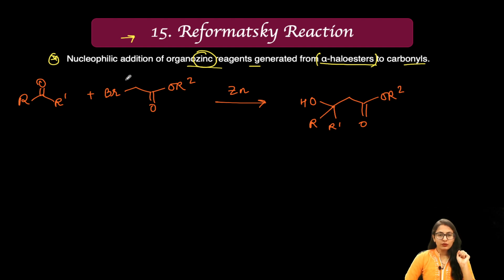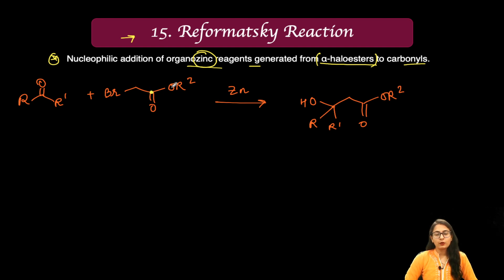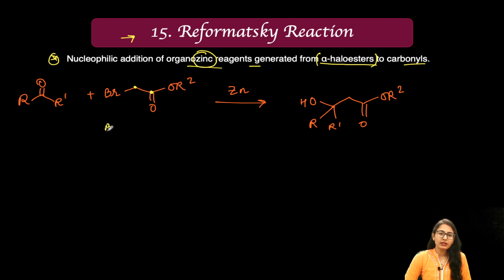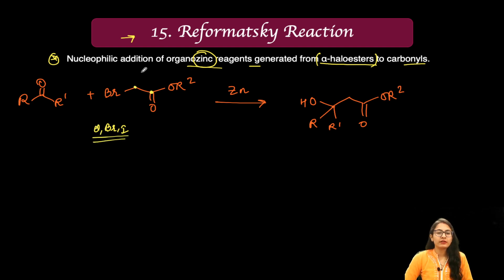Looking at the reaction written here, the alpha-haloester has an ester group — a carbonyl and OR — and on the alpha carbon there is a bromide. It could be any halogen: bromine, iodine, or chlorine, but not fluorine because that bond is not polarizable enough to break.